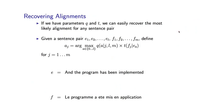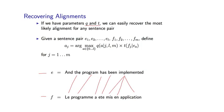A final point about IBM Model 2: once we have the parameters Q and T — and we'll talk next about how to estimate these from training examples — it is very straightforward to find the most likely alignment for a given sentence pair. This process takes in an English sentence paired with a French sentence, and produces an alignment specifying for each French word which English word it aligns to.